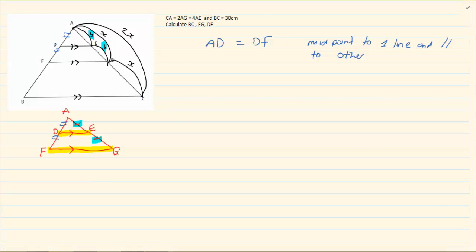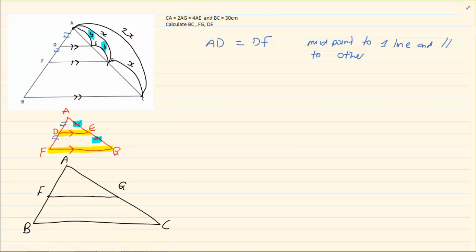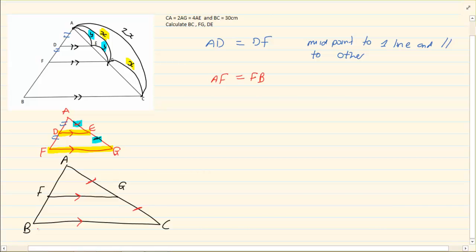What else do they give us? Now look at the next triangle — we are looking at a bigger triangle. We are looking at A, F, G and B, C. AG and GC are equal, and they have already given to us that it is parallel. So what can we say now? That AF is equal to FB. Why? Midpoint of one line and parallel to another.